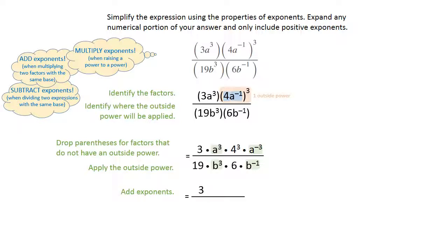Drawing our fraction bar, your 3 and your 4 to the third power aren't going to change, but your a to the third and a to the negative three is going to become a to the zero when I add those exponents. And we also know that a to the zero is actually one.